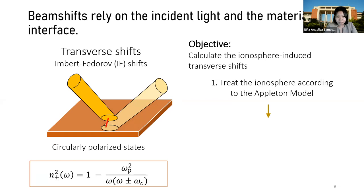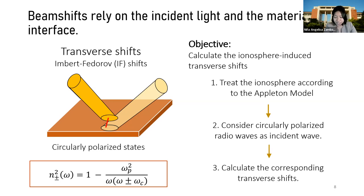By following these steps: the first is to treat the ionosphere according to the Appleton model, consider circularly polarized radio waves as incident waves, and finally calculate the corresponding transverse shifts.